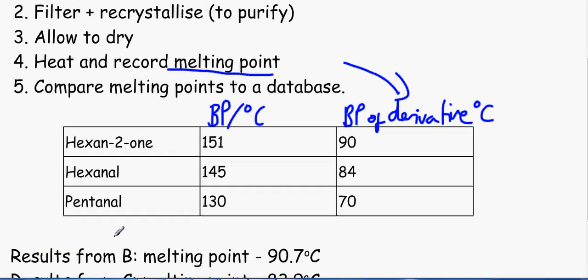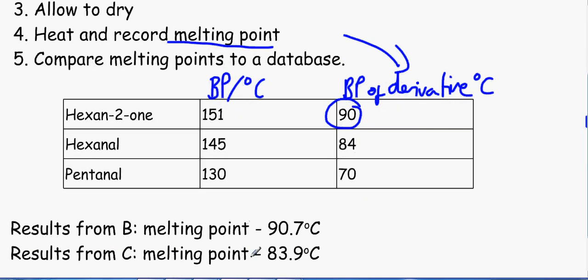So looking at the results from it. From B, the melting point is 90.7 degrees Celsius. Now taking into consideration human error with the thermometer, we can assume that this ketone is hexane 2-one. From C, it's 83.9. Again, with human error with the thermometer reading and all of that, we can assume that it is hexanal, just based on these three figures over here.